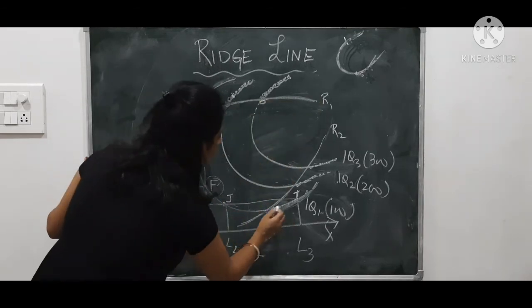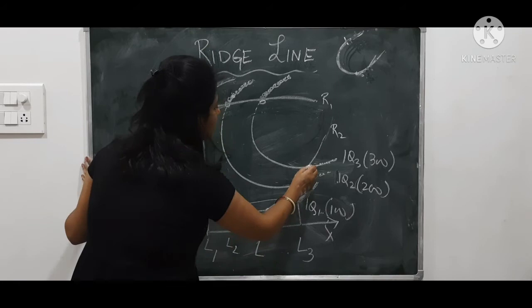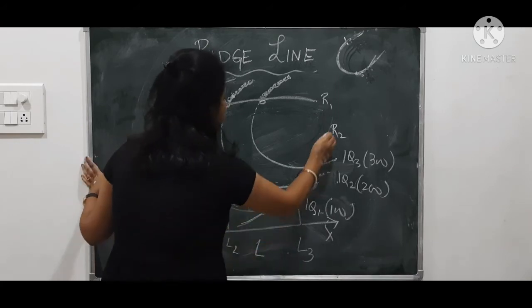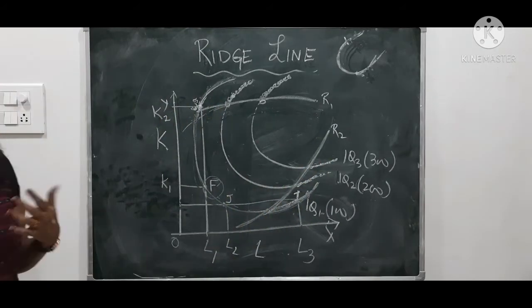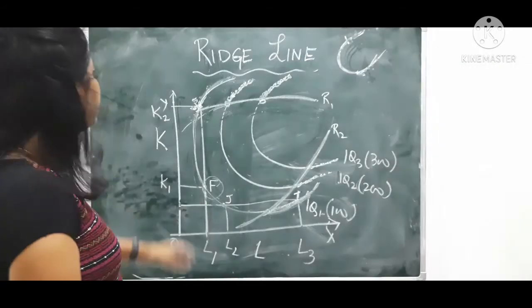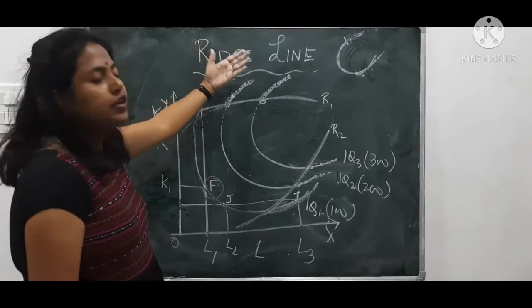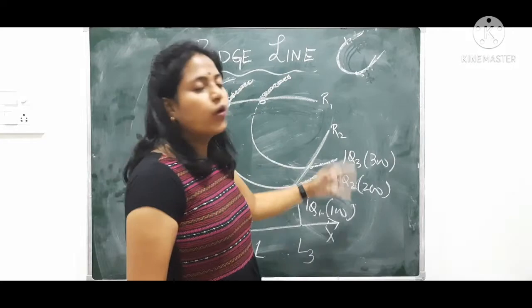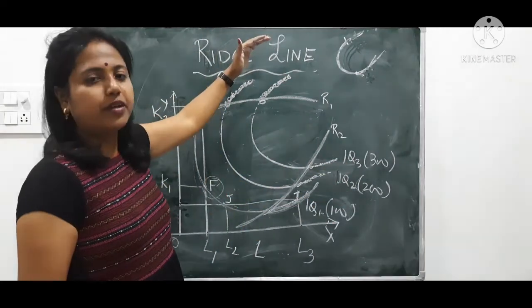Similarly, here also we draw all the things and we draw a line. This line is known as ridge line, this line is known as ridge line. The line beyond which the isoquant curve becomes upward sloping.